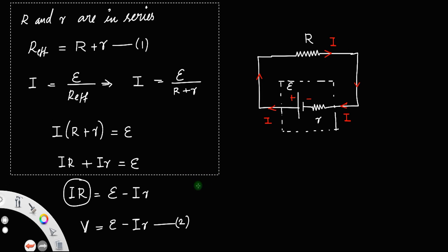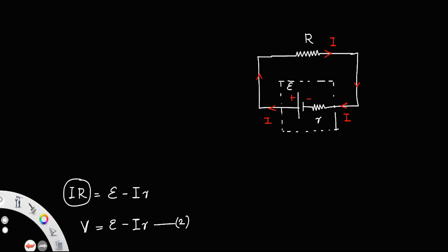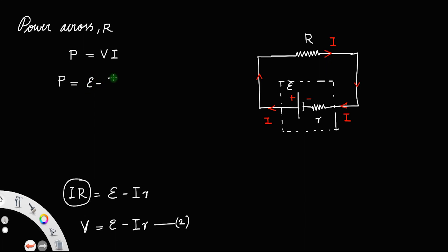Now, the power across the external resistance R — power is always voltage times current. So P = (E − Ir) × I, which gives P = EI − I²r. Let us call that equation 3.